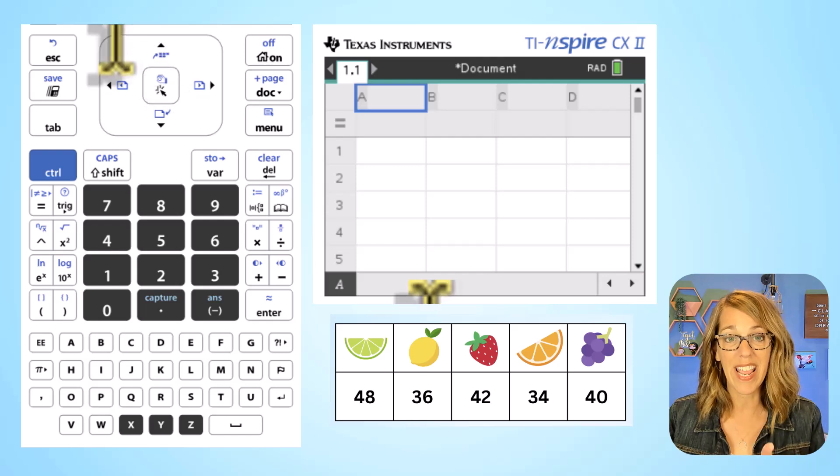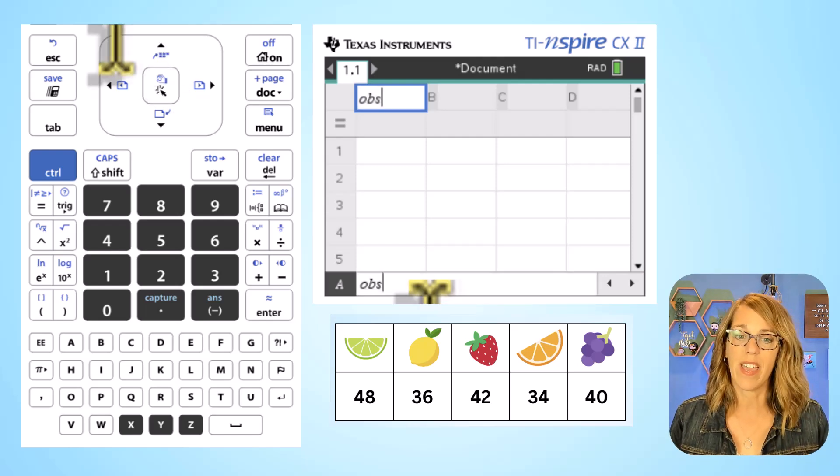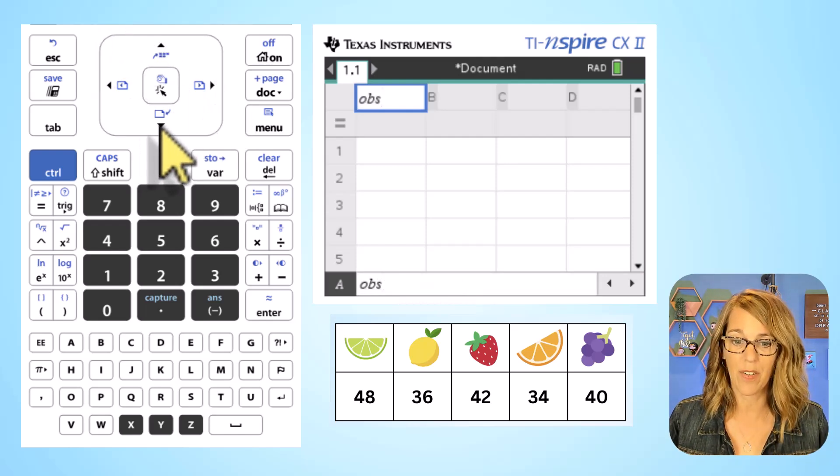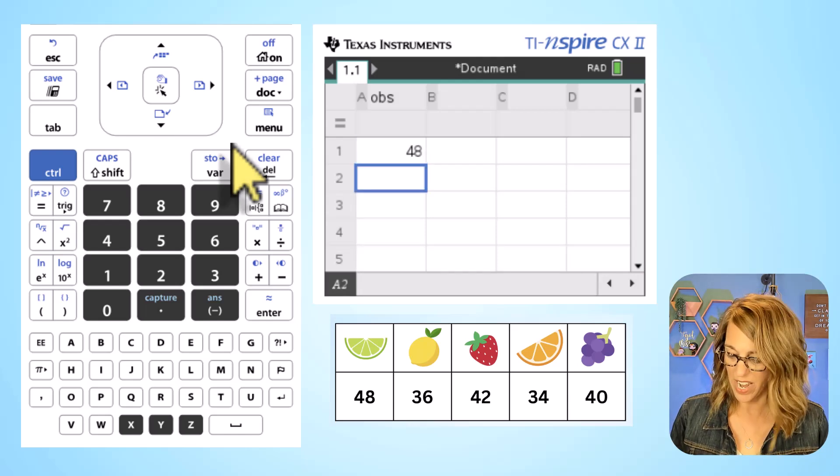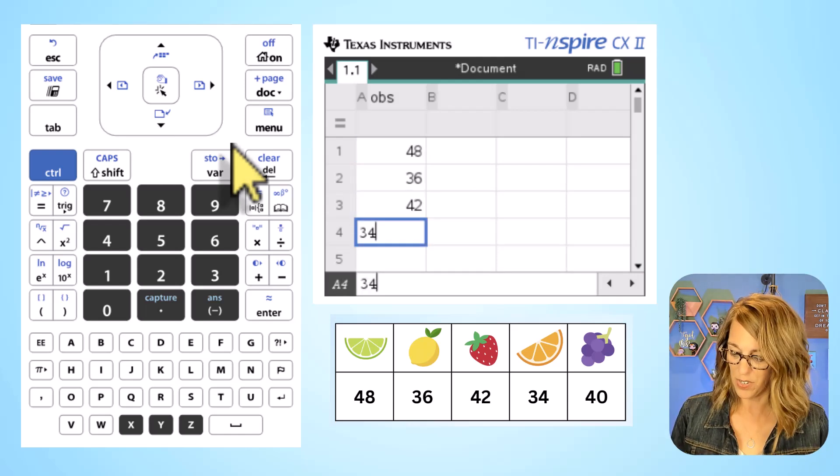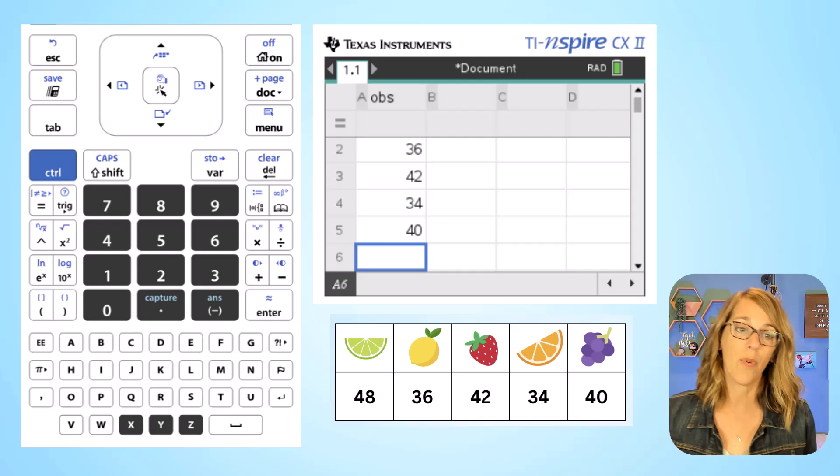Let's go ahead and arrow up to the name. I'm going to call this just OBS for observed, and then arrowing back down, let's go ahead and put our data in. So I've got 48, 36, 42, 34, and 40.